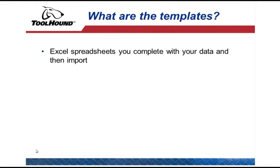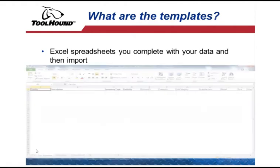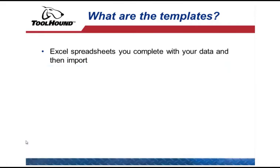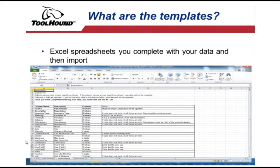The import templates are Excel spreadsheets with a preset format for each data type. Regardless of the type of data being imported, each template contains two tabs. The first tab is a worksheet to be filled in with your data — this tab must remain exactly as shown. Do not change the formatting, column order, or column names. Changing the structure of the spreadsheet will cause the import to fail. The second tab contains instructions on how to complete each column in the worksheet.